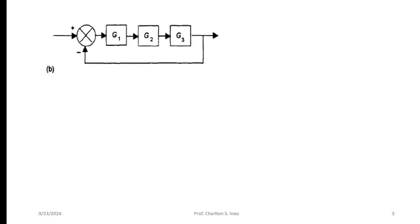We move now to the next problem. Here we are given three blocks as seen in number one, but the thing is we have a feedback loop. This feedback loop has no block, which means this is unity or unit feedback.